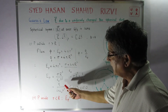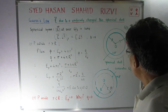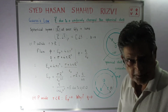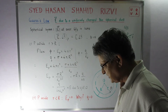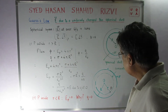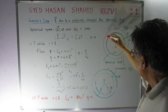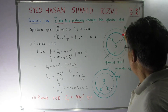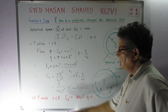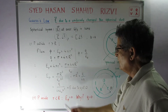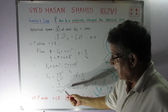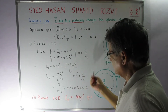If small r equals capital R, meaning we are interested in the electric field just on the spherical shell itself, then E_P at that point equals Q upon 4 pi epsilon-naught R squared.